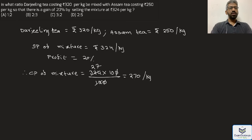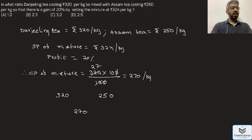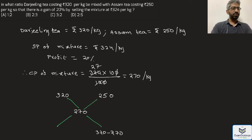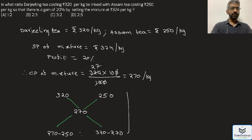Considering variety one price at 320 rupees per kg, variety two (Assam tea) at 250 rupees per kg, and the mixture cost price at 270 rupees per kg, and applying the rule of allegation: 320 minus 270 is 50, and 270 minus 250 is 20. The ratio is 20 is to 50, which equals 2 is to 5. This is given in option D.